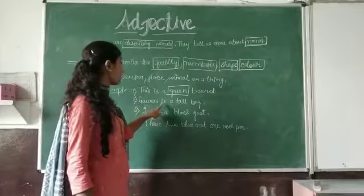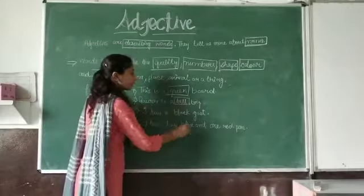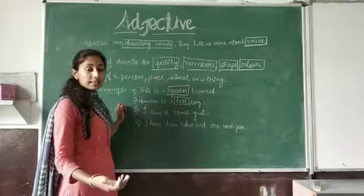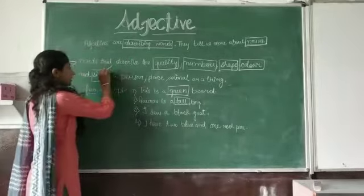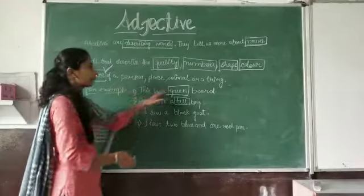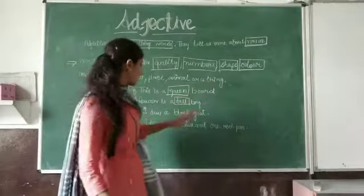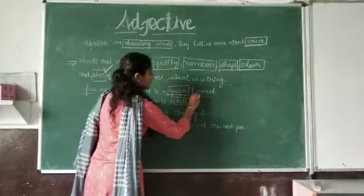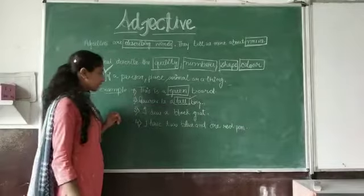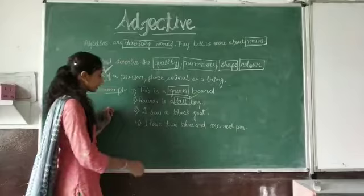And second sentence is Gaurav is a tall boy. So here tall describes the size of the boy. The words which describe the size of a person, place, animal or thing are also called adjectives. Gaurav is a tall boy and tall is adjective in this sentence.